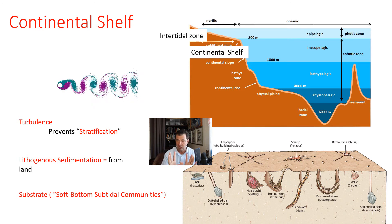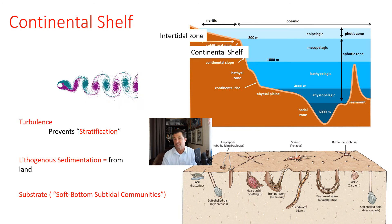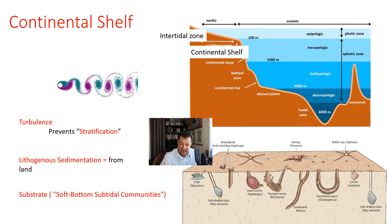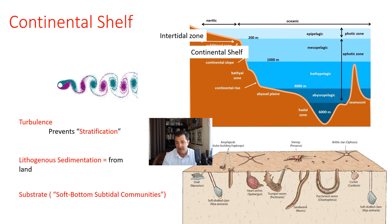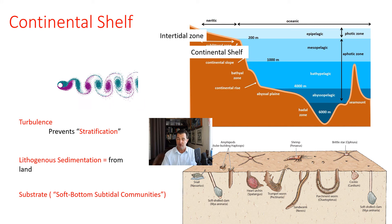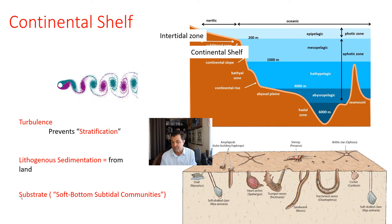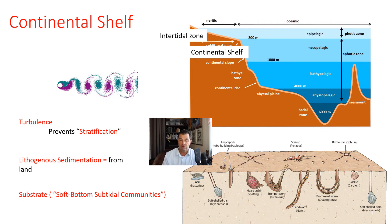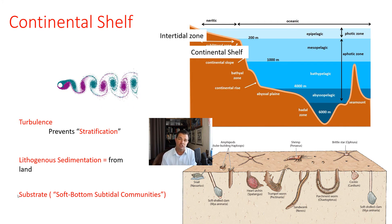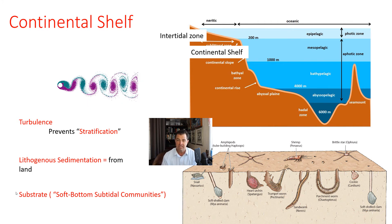When rocks erode, they flow into the water and create basically a substrate. So the sediment that is on the continental shelf is primarily from the land. There are different kinds of substrate. We're going to start first with what we call the soft bottom subtidal communities, which are basically like a sandy beach, and we'll talk about the organisms that live there.